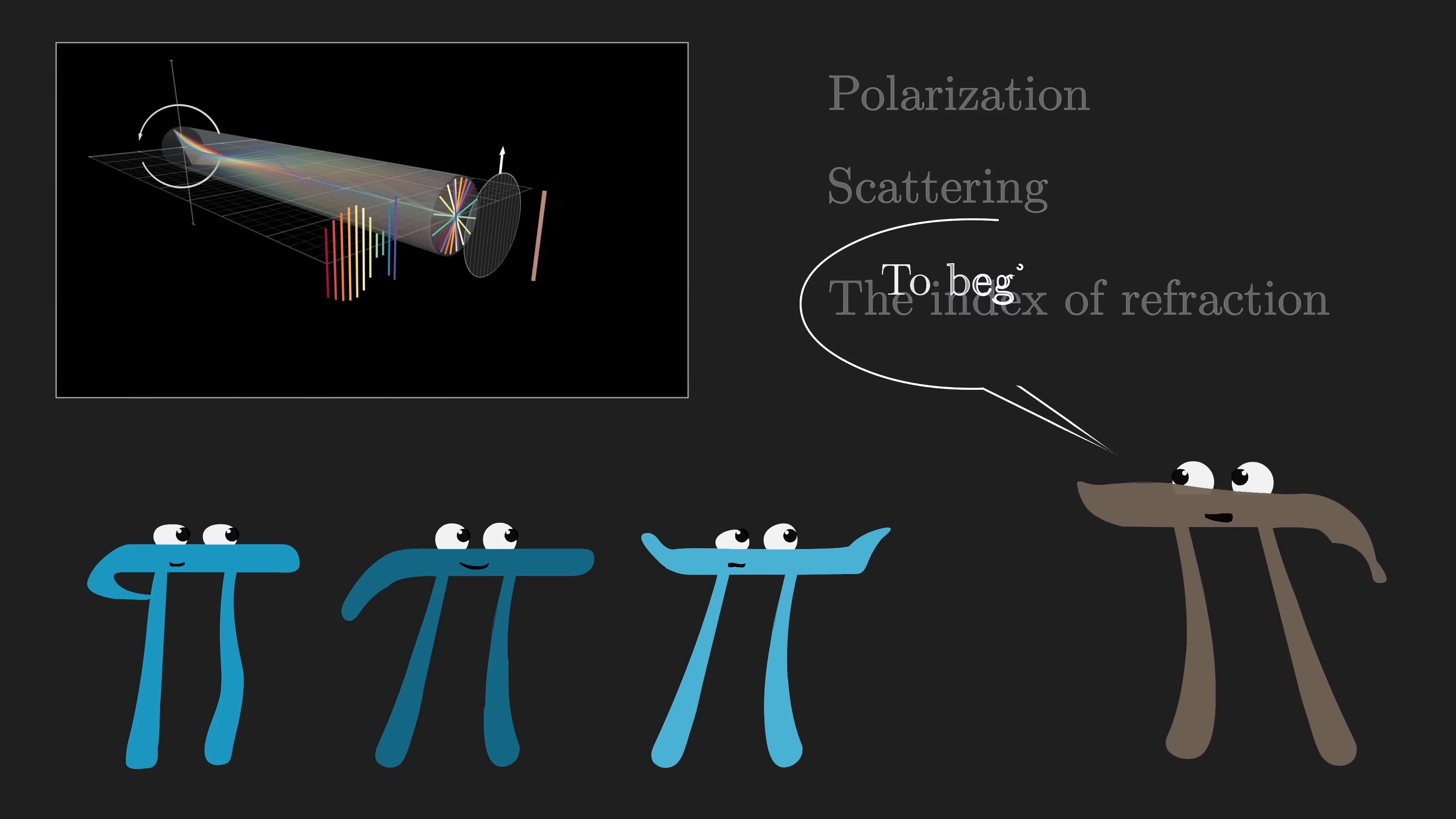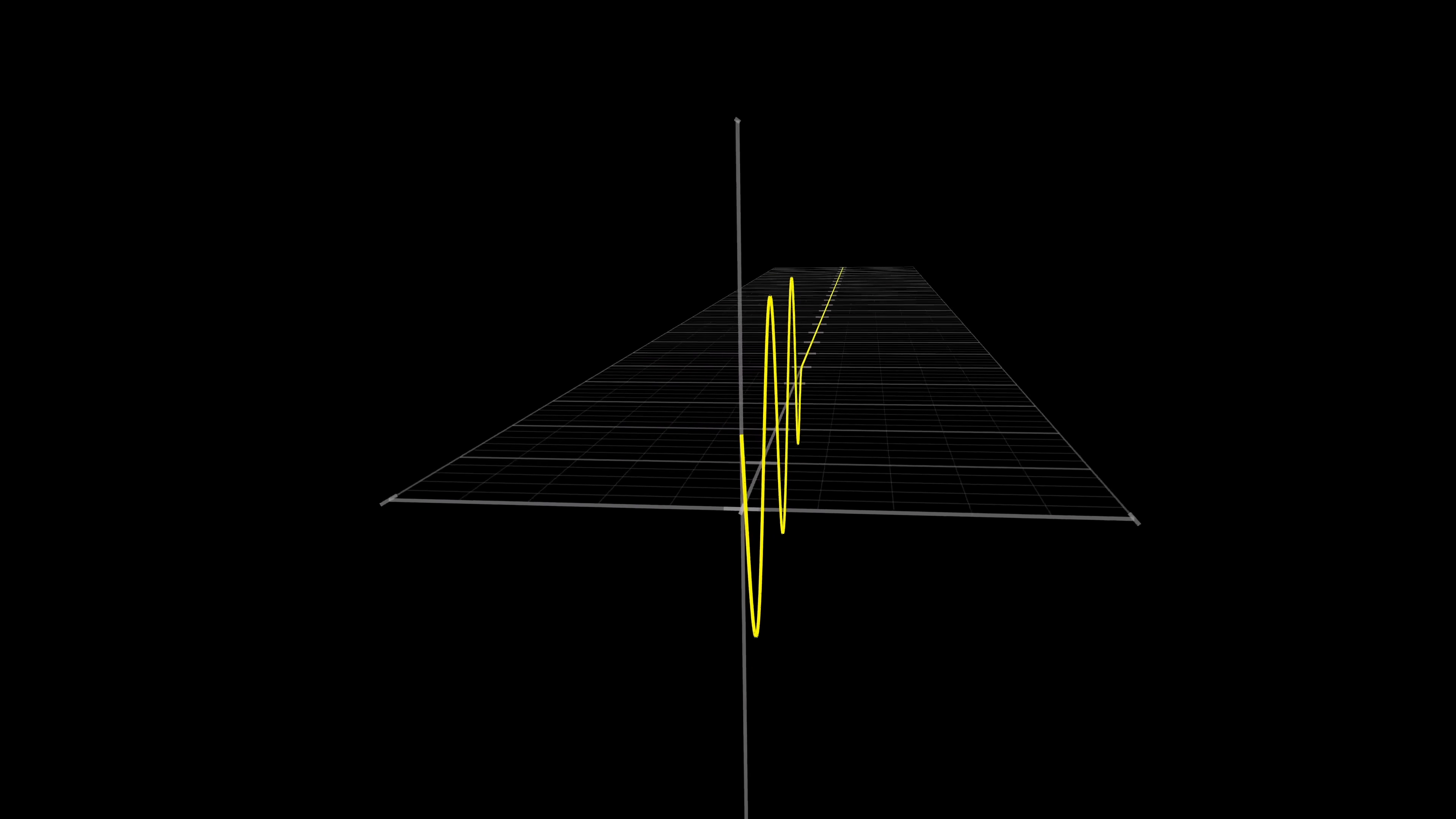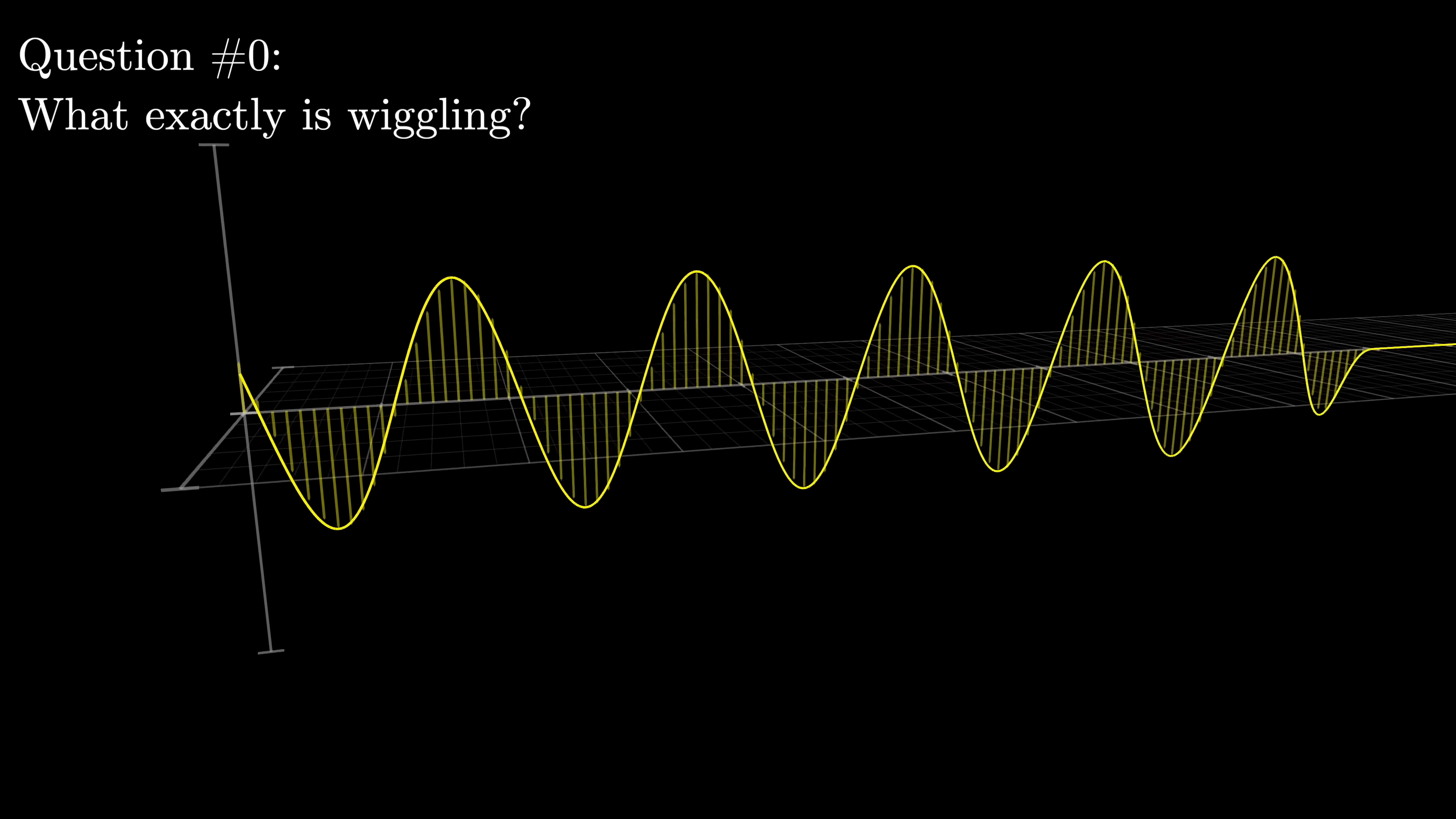To kick things off, let me show you the overall structure for the explanation of what's going on here, and along the way record various questions that we still need to answer. A basic premise to the whole thing is to think about polarized light as a propagating wave which is wiggling in just one direction. And I suppose question number zero is for us to be clear about what exactly is wiggling.